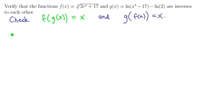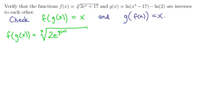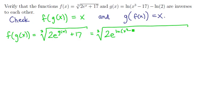Let's focus on this one first. We're going to compute what f of g of x is. Remember, f of anything is the cube root of 2e to that thing plus 17. So now we're going to replace g by its formula. We have the cube root of 2e to the power ln of x cubed minus 17 minus ln of 2, plus 17.